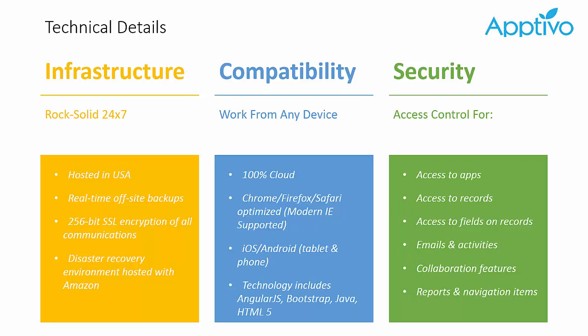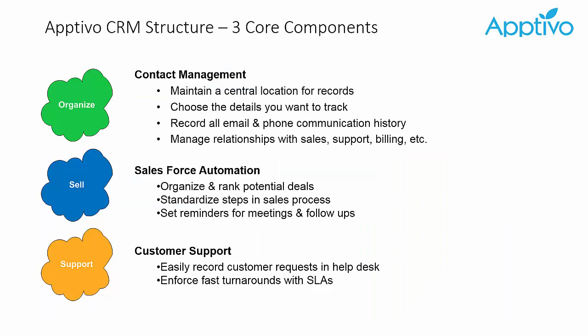Inside of the CRM, you'll have lots of different security features for restricting access to an entire record, a specific feature, or a certain set of data like email within one record. When talking about CRM in Apptivo, we look at it as three general areas of functionality. There's contact management — one profile for each person and organization you work with. Then Salesforce automation for pipeline management, tracking potential deals through their progress. And customer support — a help desk system where you can log inquiries or problems and track resolution steps.